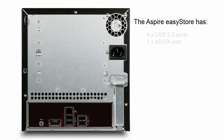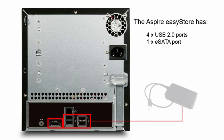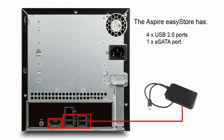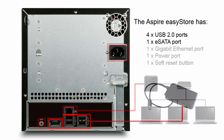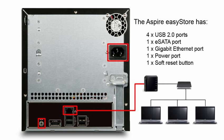Turning to the back, we see four USB ports and an eSATA port. These can be used to add external hard drives to your EasyStore. The benefit of the Aspire EasyStore is that it's highly scalable, allowing you to consolidate all of your data. There is also a network and power port and a soft reset button used if you forget your login details. It is important to note that using the soft reset button will not delete your files.